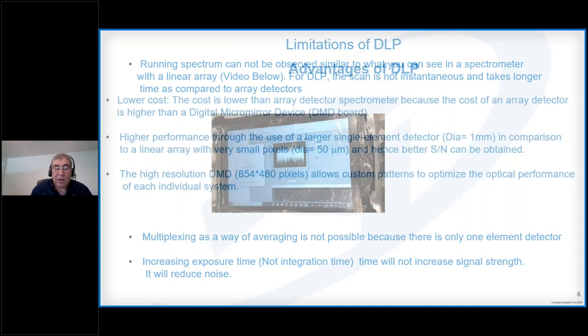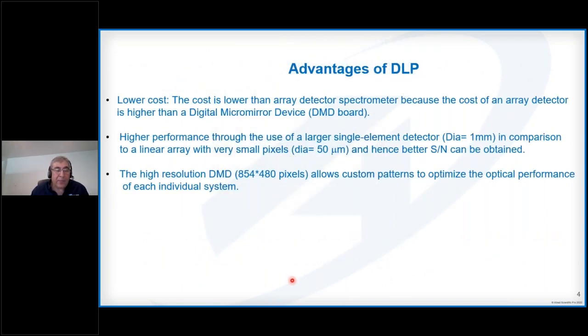This brings about certain advantages and disadvantages for DLP. Let's talk about the advantages first. Because the cost of the micromirror array is less than the detector array, it will reduce the cost of the spectrometer. DLP spectrophotometers are significantly less expensive because the parts are less expensive. Secondly, because a single point detector is used instead of an array detector, you can increase the size, and this increases the signal-to-noise ratio.